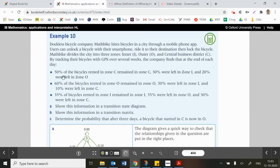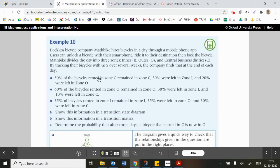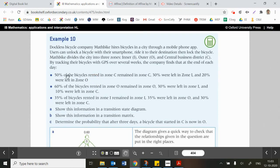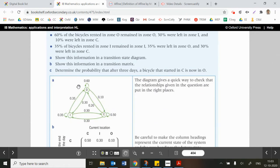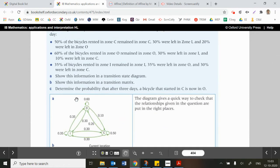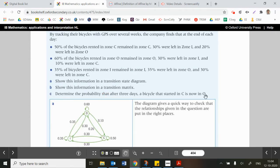So they're coming up with some stats for this. They're saying 50 percent of the bicycles rented in zone C remained in zone C. 30 percent were left in zone I and 20 percent were left in zone O. So then it asks us, show this information in a transition state diagram. We will make one of those in a second. Then show this information in a transition matrix. So it will be quite easy to change from this transition state diagram to transition matrix. And then it says determine the probability that after three days the bicycle started in C is now in O.